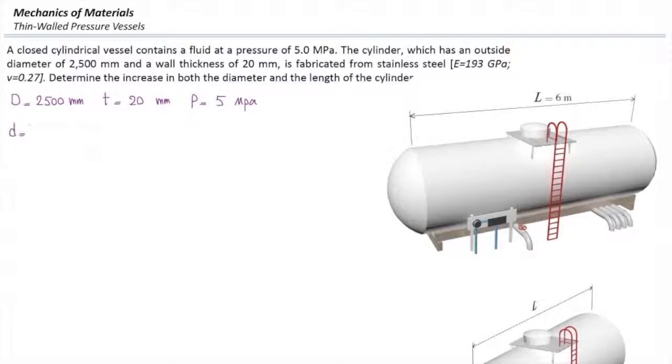Internal diameter, which is the parameter we use in our equation, is external diameter minus two times the wall thickness, which equals 2,460 mm. The radius would be half of that, 1,230 mm. Sometimes we use radius instead of diameter.